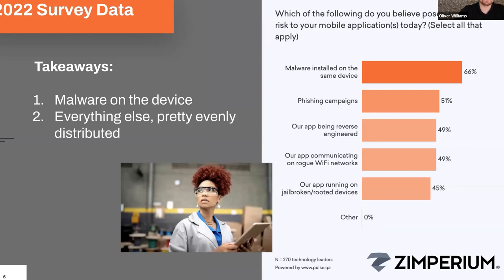Looking at mobile applications specifically, if you own a mobile application, the biggest perceived risk by far is malware installed on the same device. This is a strong trend right now in financial markets, where Trojans have been designed to target banking applications — posing as banking apps or launching overlay attacks against data in those solutions. Other significant threats include targeted phishing campaigns against a brand or application, and application reverse engineering: taking an app from the app store, repackaging it with malicious code, and re-releasing it on third-party app stores.